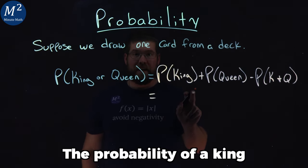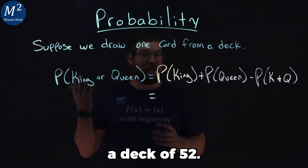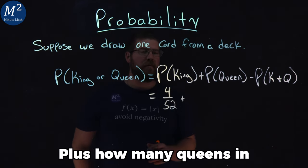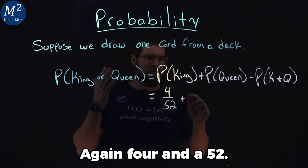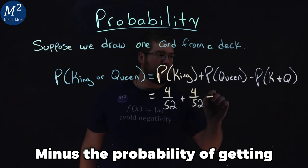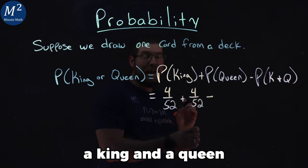The probability of a king - there's four kings in a deck of 52. So we have 4 out of 52 plus how many queens in a deck? Four out of 52 minus the probability of getting a king and a queen.